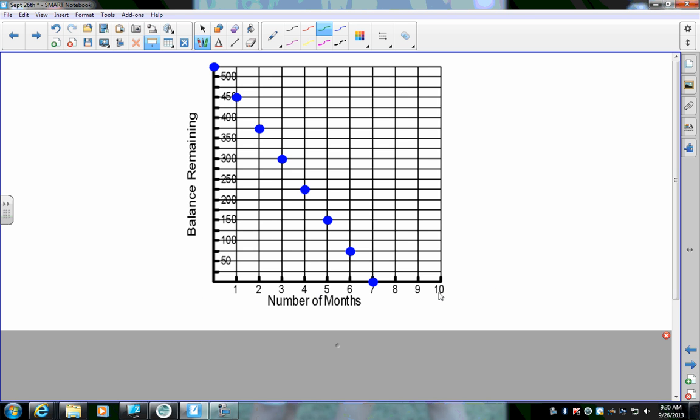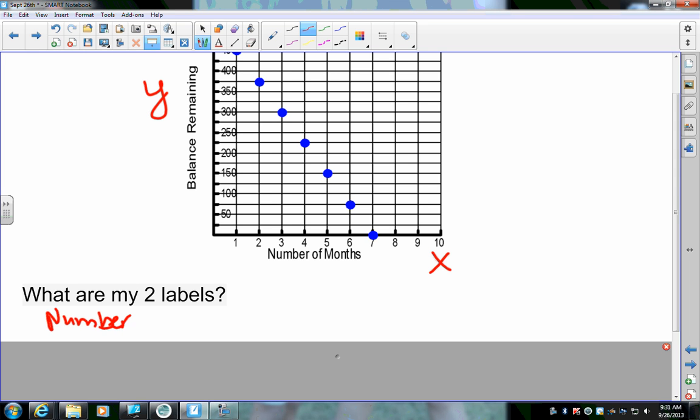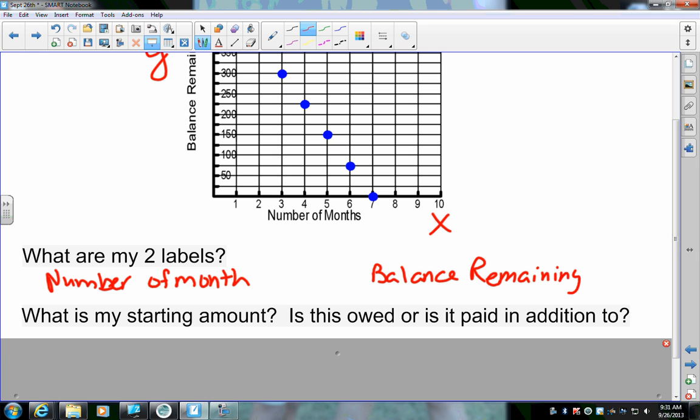Alright. Let's look at the front of your paper. And we're talking about, we've got a graph, and it's talking about balance remaining and number of months. When I look at this graph, there's a couple different things that I need to do in order to answer my questions. But first, let's look at the first question. It says, what are my two labels? What is on my x and y-axis? Now, on your paper, I want you to go to your graph and I want you to label the x and the y. I need to make sure that people are getting that straight. Now, my two labels, one of them, my x, is my number of months. My y is my balance remaining.